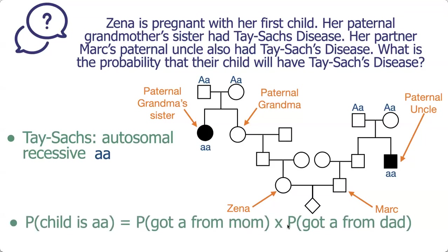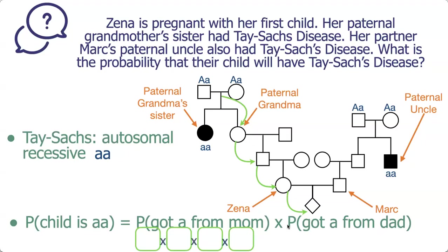Now let's set up our probability equation. In order for the child to have Tay-Sachs disease, they need the genotype little a little a. We calculate this by multiplying the probability they got a little a from mom times the probability they got a little a from dad. On the mom's side, there are four transmission events, so we draw four squares in our equation and multiply them together.